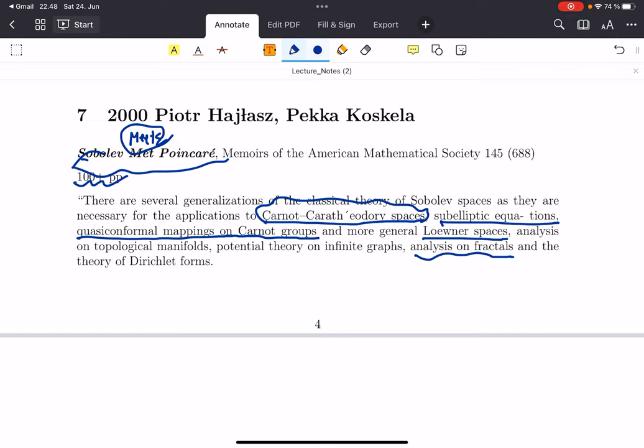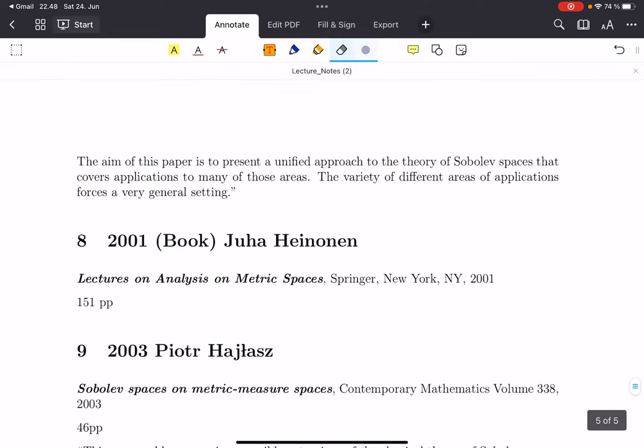The aim of this paper is to present a unified approach to the theory of Sobolev spaces that covers the applications to many of those areas. Previously, individual works had appeared—for example, people had discussed quasi-conformal maps between Carnot groups or quasi-conformal maps between Heisenberg groups. From these works, especially Heinonen and Koskela, it turned out that we can treat these with the same tools. That was the main motivation behind developing this abstract theory of Sobolev functions, upper gradients, Loewner spaces, and whatnot. The variety of different areas of application forces a very general setting. That's why it is worth one's time and effort to talk about Sobolev spaces on general metric measure spaces—not just because one can generalize, but because really there are applications.